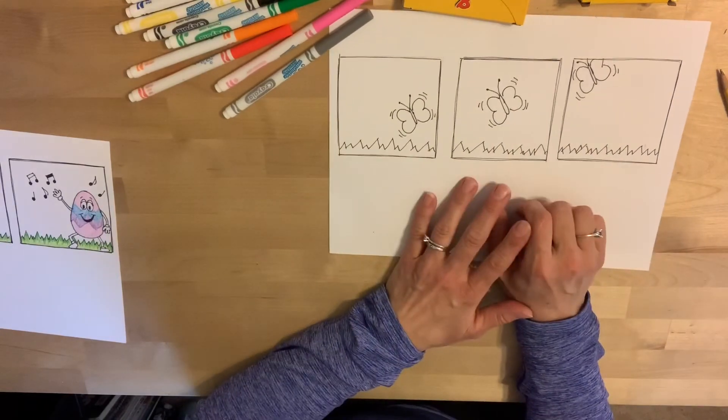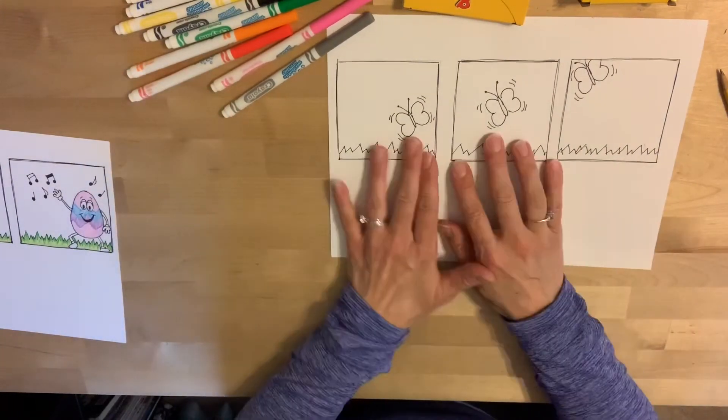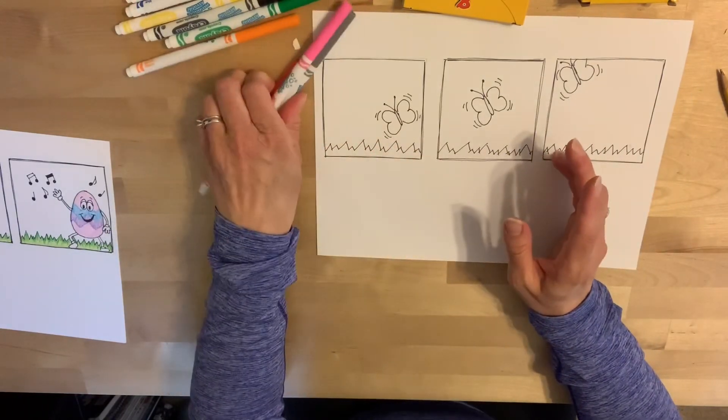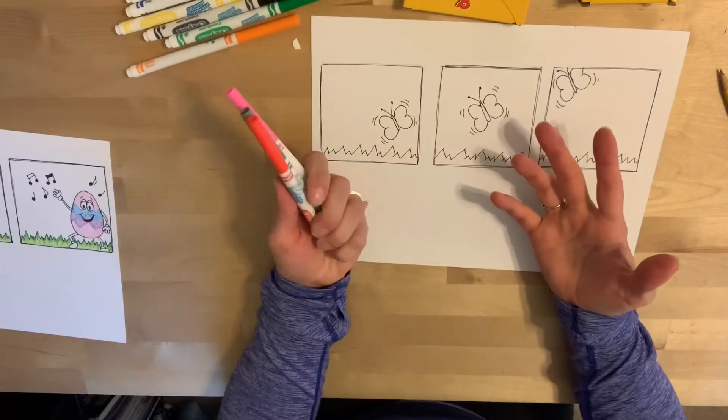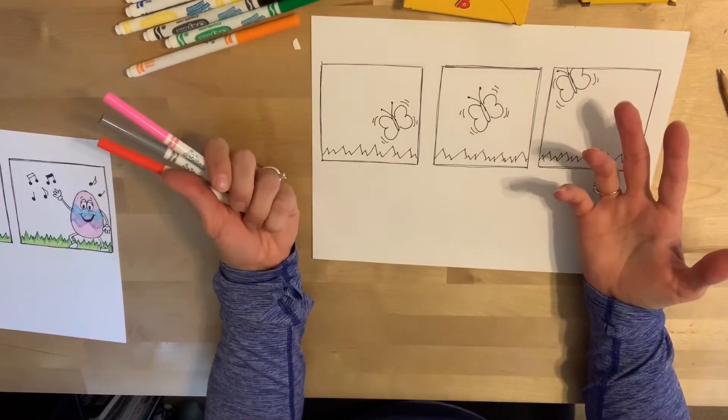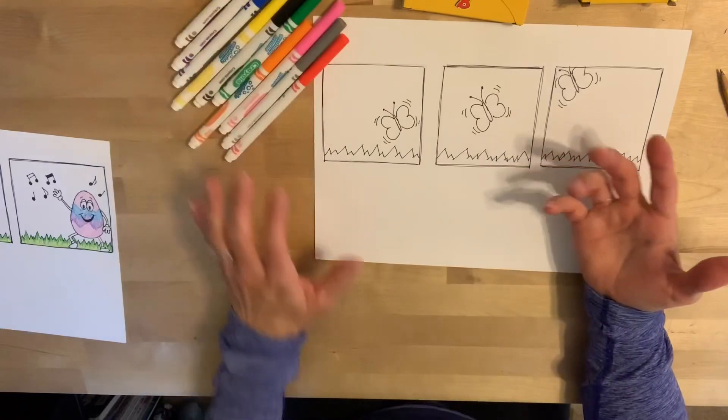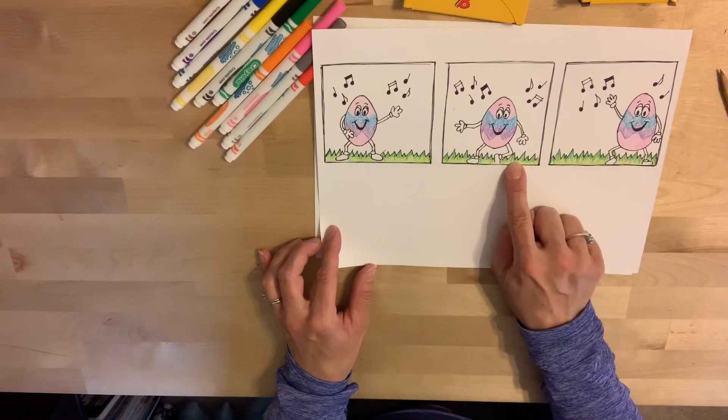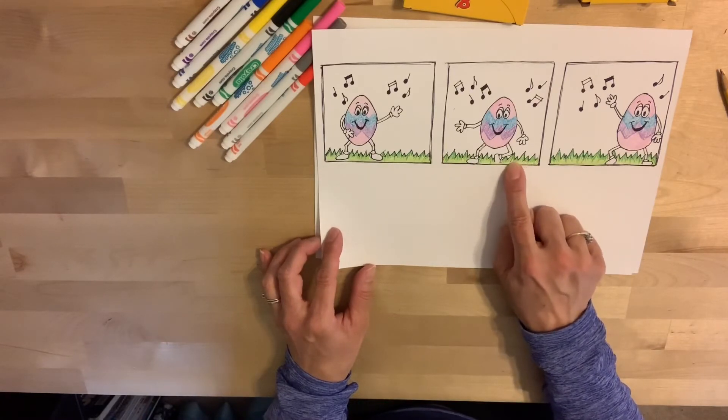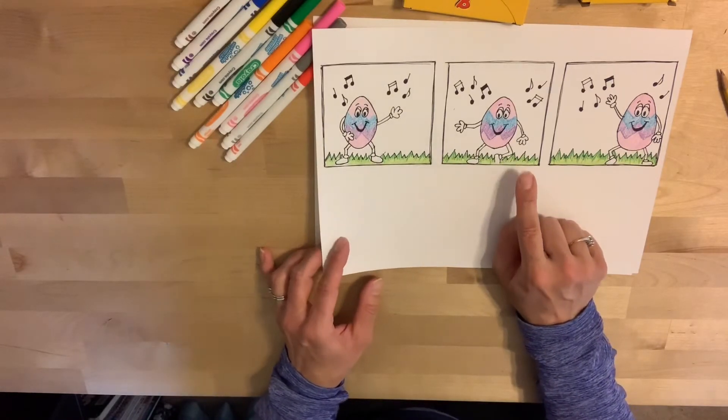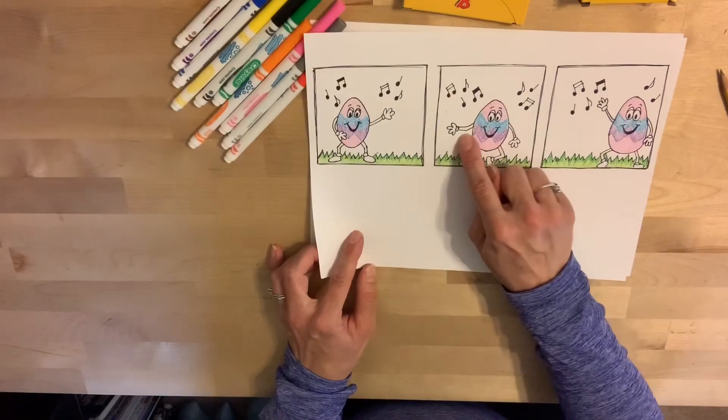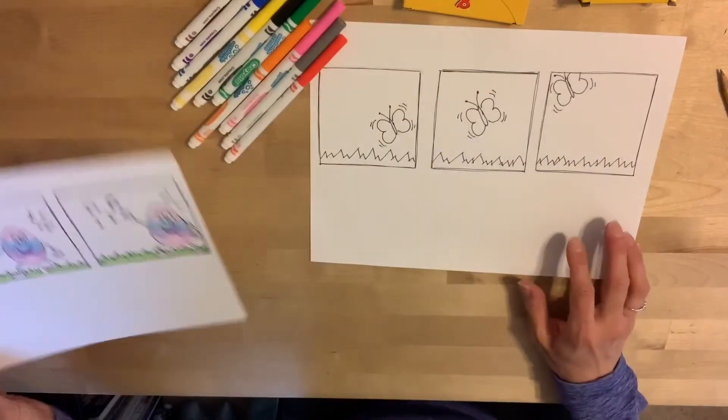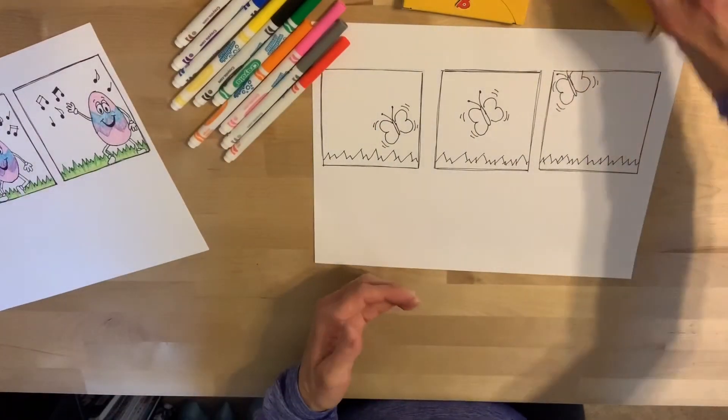To color you can use anything you have, crayons, colored pencils, markers, anything you have handy. You can also mix things, mix materials. I used crayon to color my eggs but then in the grass I colored them with crayon first and then went over with a little bit of green marker to make it look even more like grass. If you wanted you could even take watercolor and color the sky behind the egg or behind your item if you want. It's really up to you.